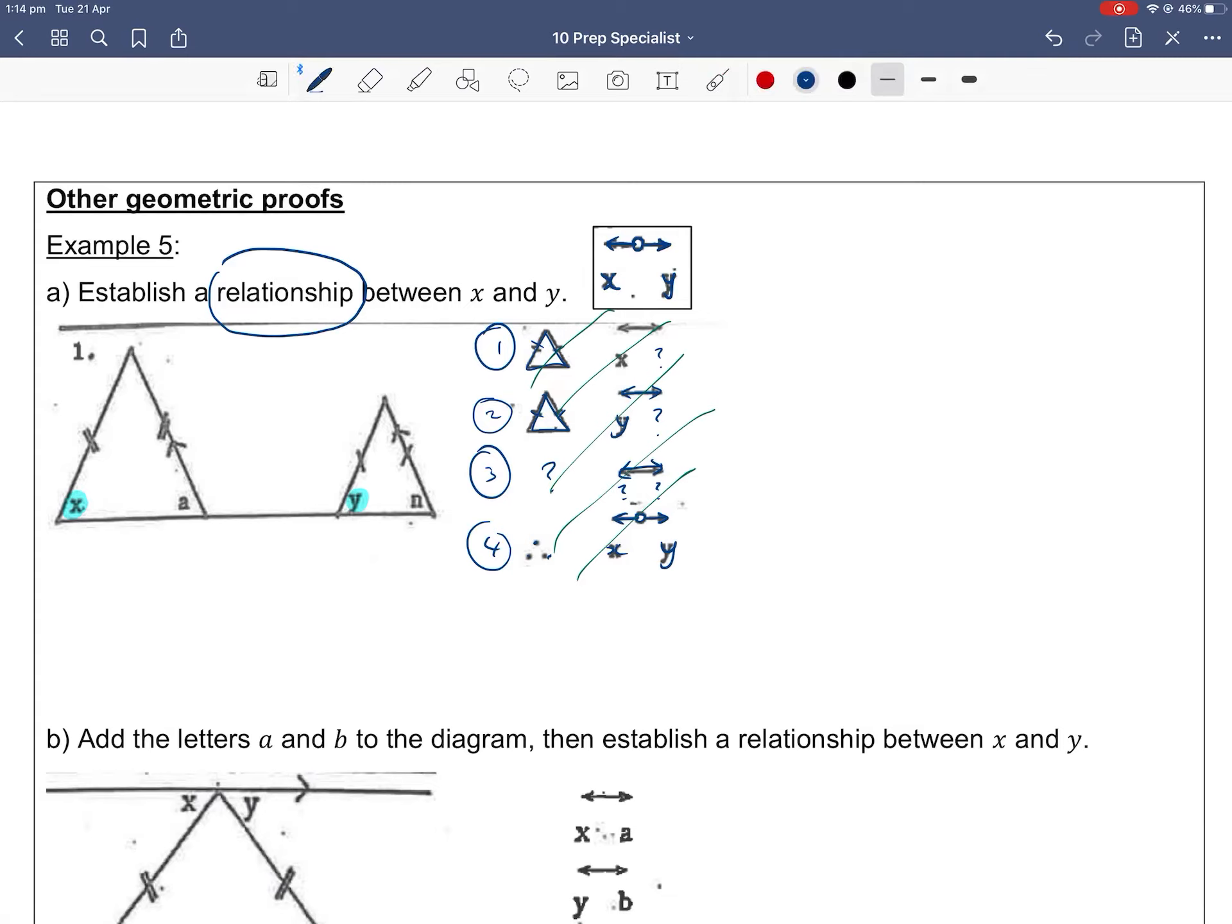So step one, look at where x is. It's in a triangle, right? So this is the triangle of x. In particular, it's an isosceles triangle because we can see the two dashes there indicating that these two sides are the same.